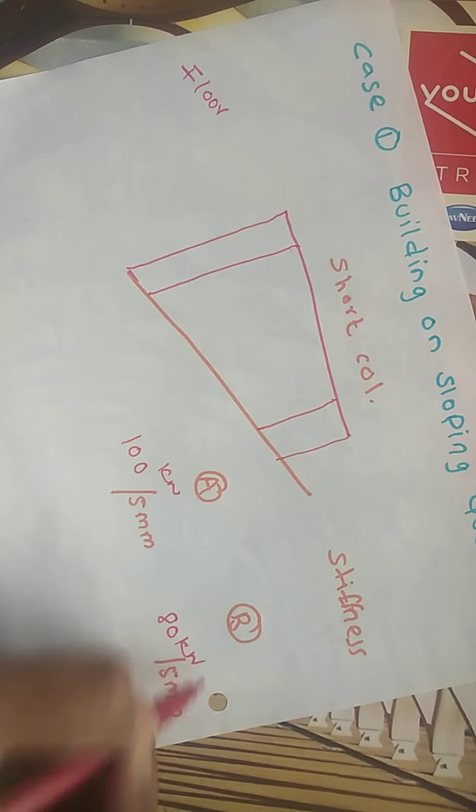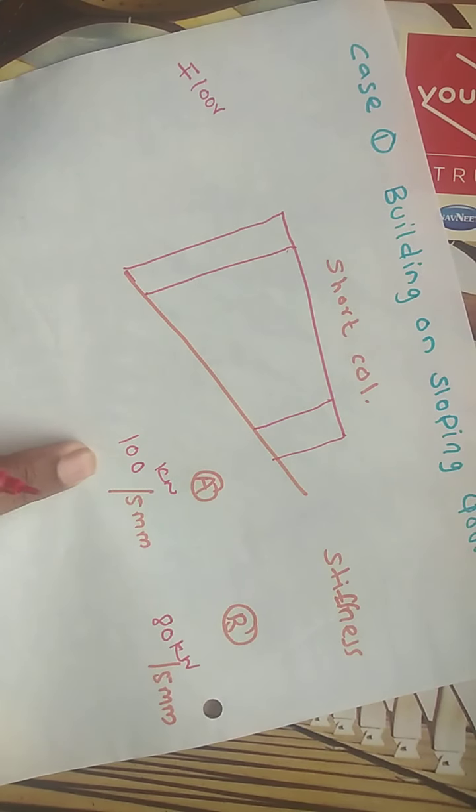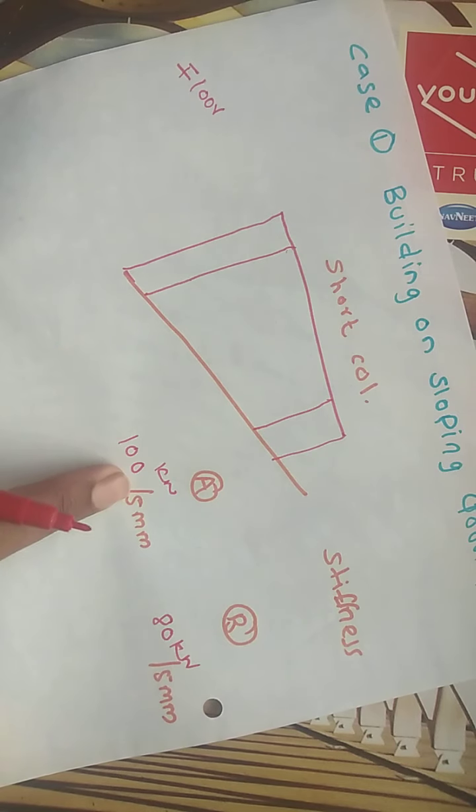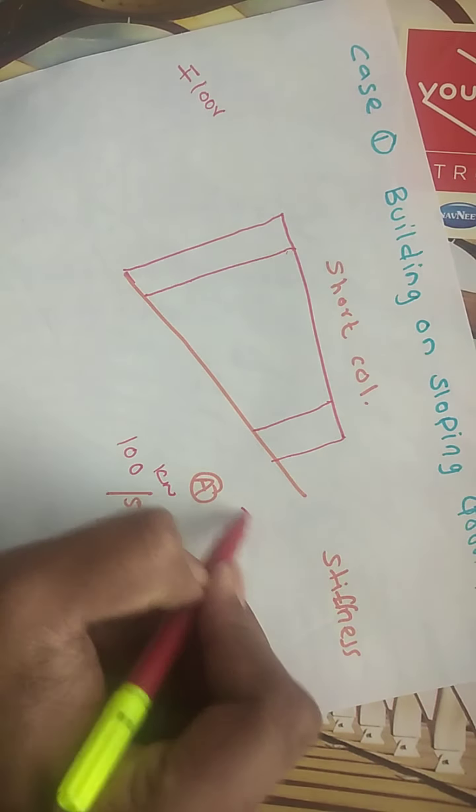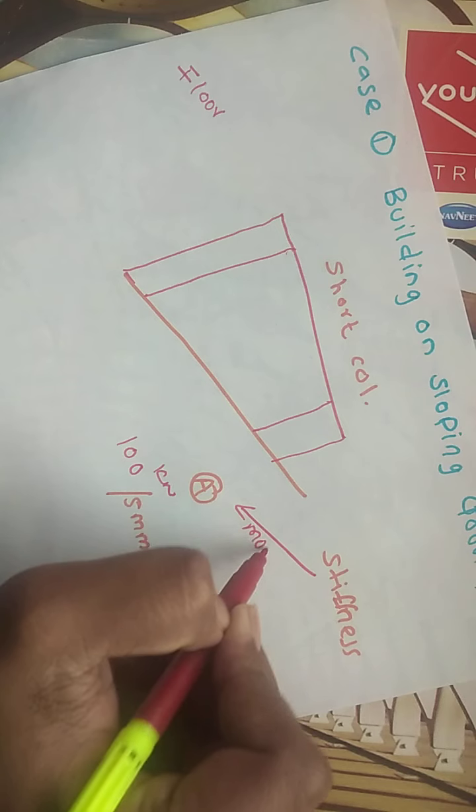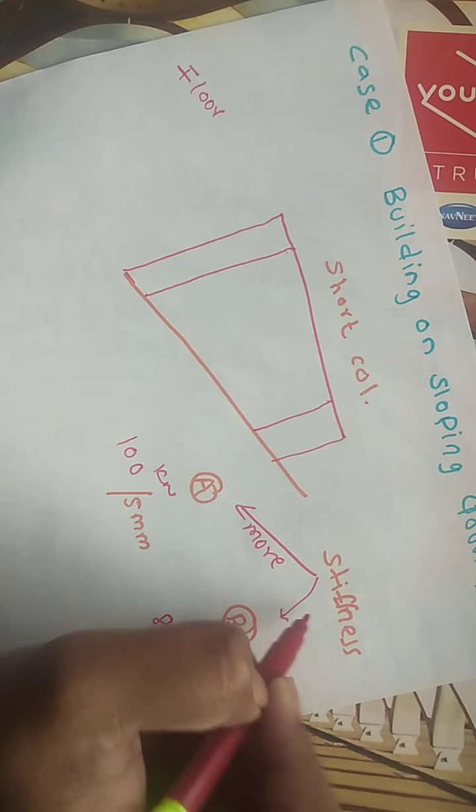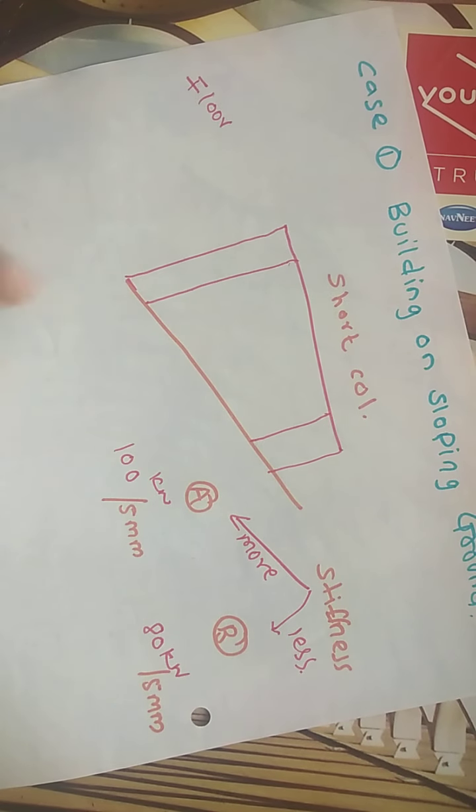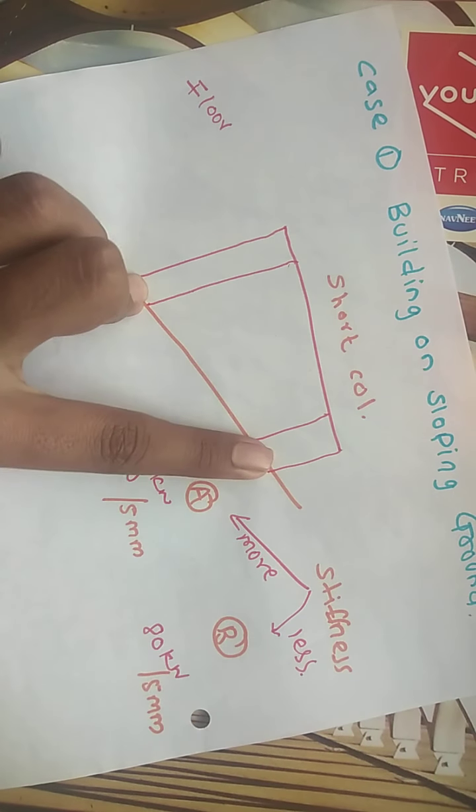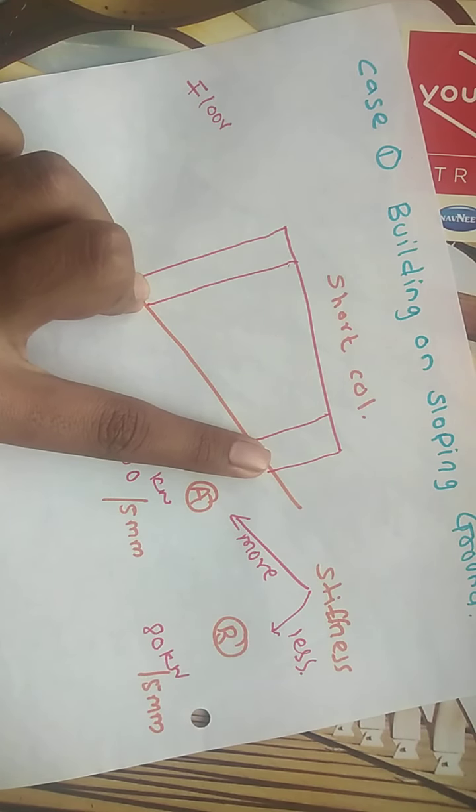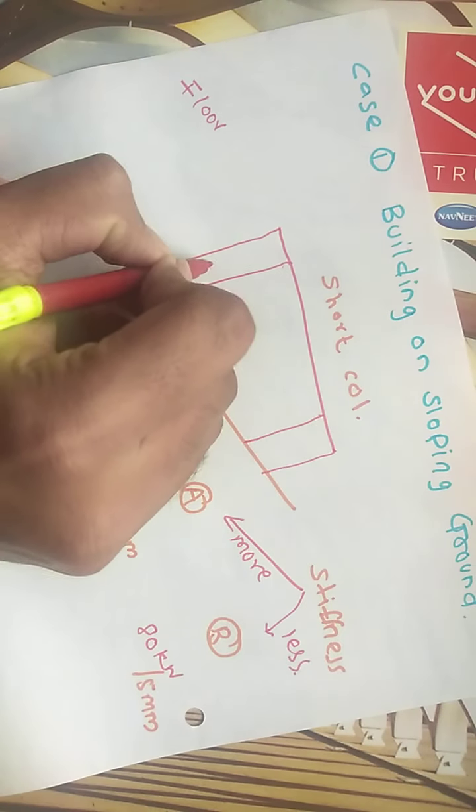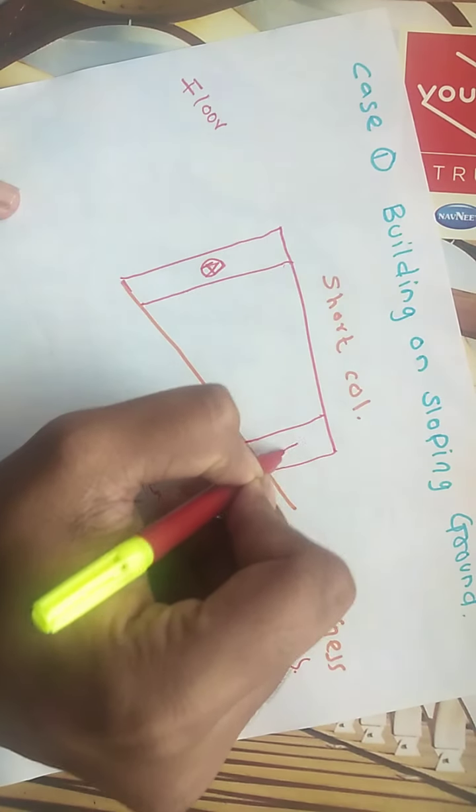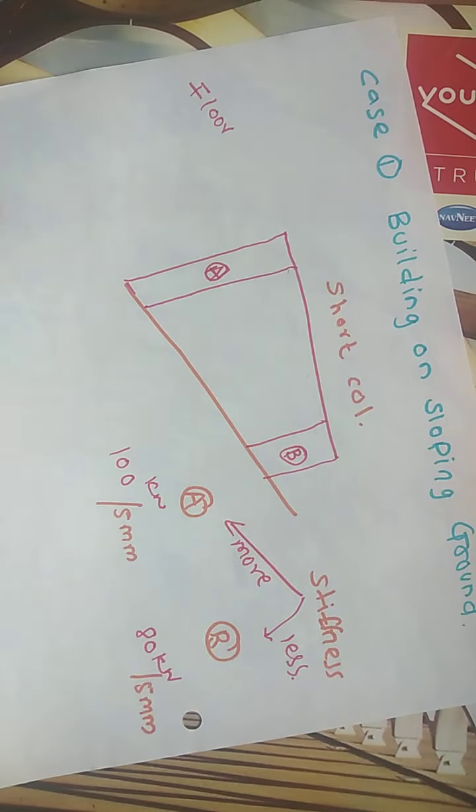Then we can say that body A is more stiffer than body B. So now you have to decide which is more stiffer. My question to you is: column A which is tall and column B is short, so which one is stiffer?